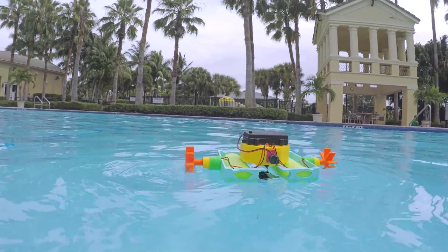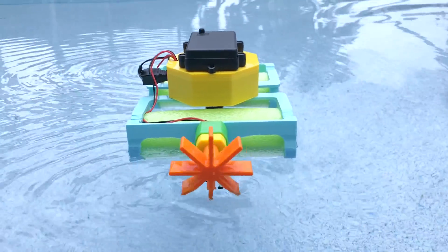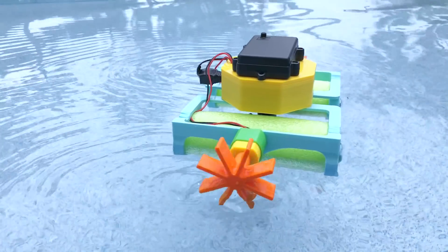The rover stays afloat with the help of pool noodles that are secured to the 3D printed enclosure. We use Ninjaflex filament to 3D print watertight mounts for the motors and components.